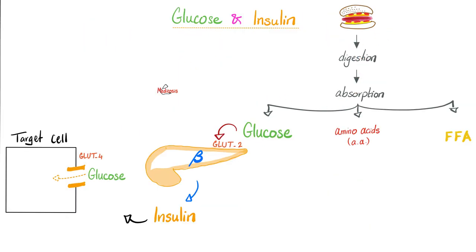When you eat, you get glucose — and then we have two stories. The entrance of glucose into the pancreas to stimulate the beta cell — this is GLUT2 — and then the beta cell of the pancreas gets stimulated to secrete insulin. Insulin will go to the target cell, usually skeletal muscle or adipose tissue, and tell them to get that glucose in so you can store it as glycogen. The door here is GLUT4.